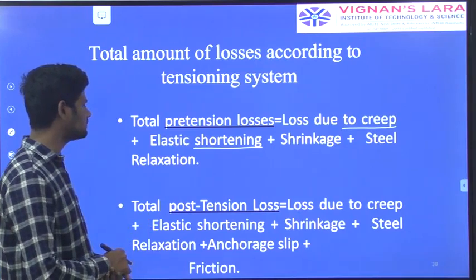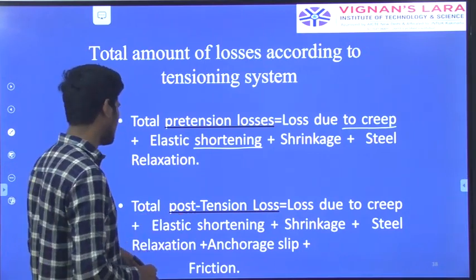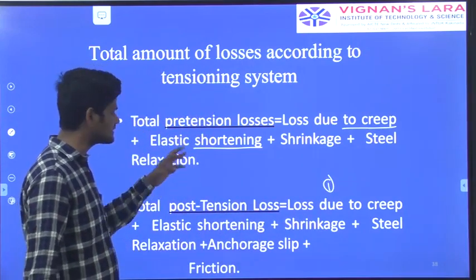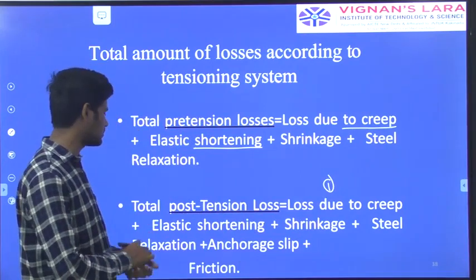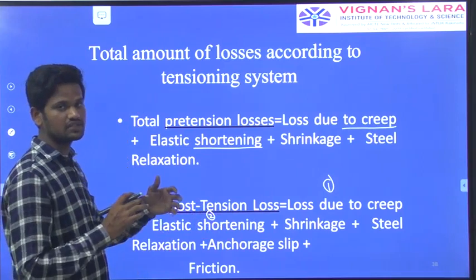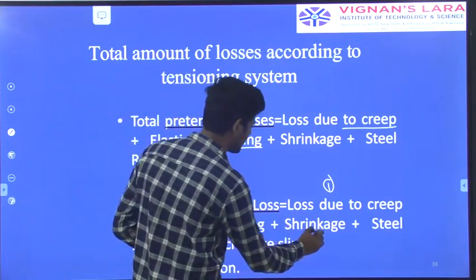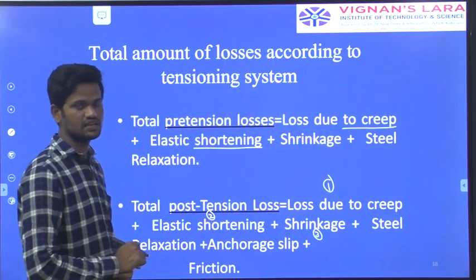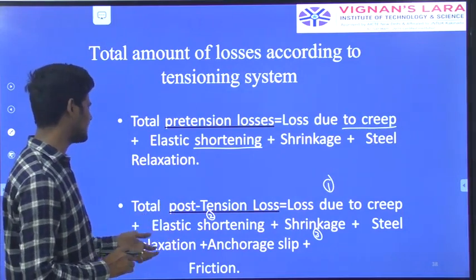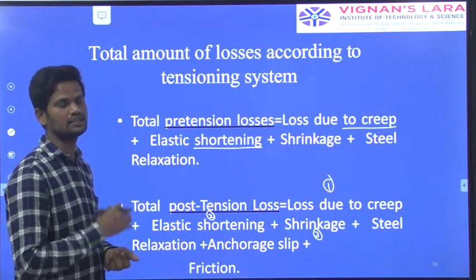Coming to the total loss of pre-stress due to post-tensioning: the total loss in post-tension includes loss due to creep of concrete, calculated in the same way as for pre-tensioning. Next, we are calculating elastic shortening of the concrete — based on the type of concrete and how much elastic shortening will happen. Then shrinkage of the concrete, steel relaxation, as well as anchorage slip plus friction losses are also considered for the total loss of pre-stress in post-tension members.